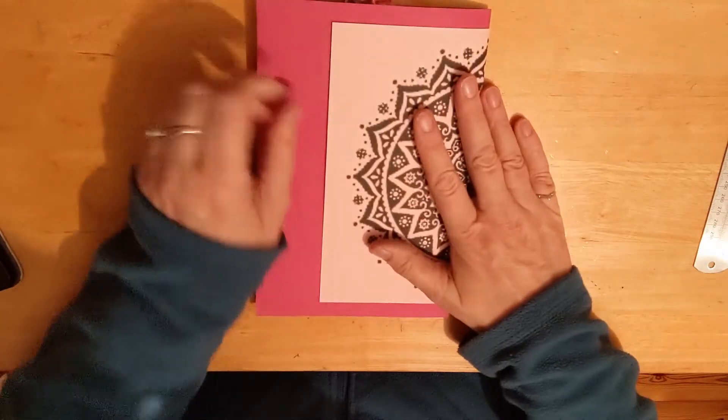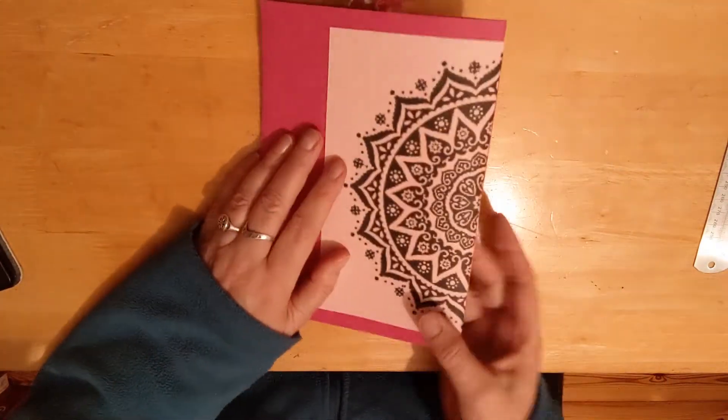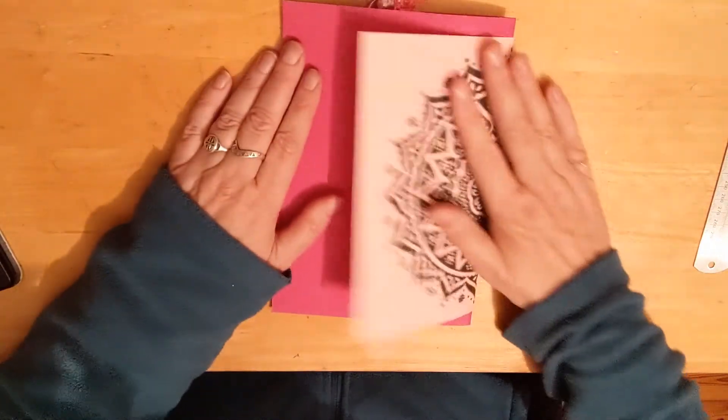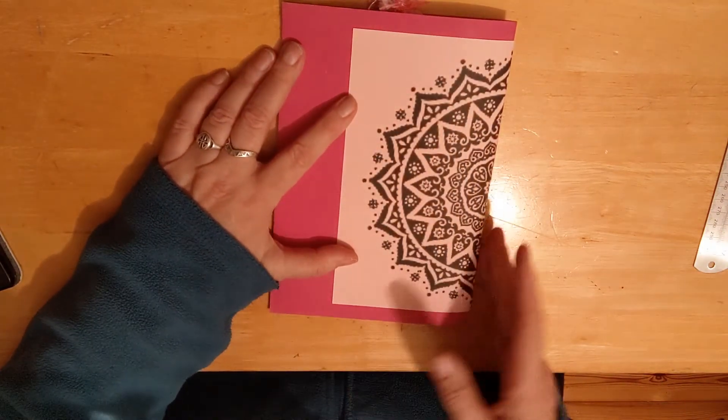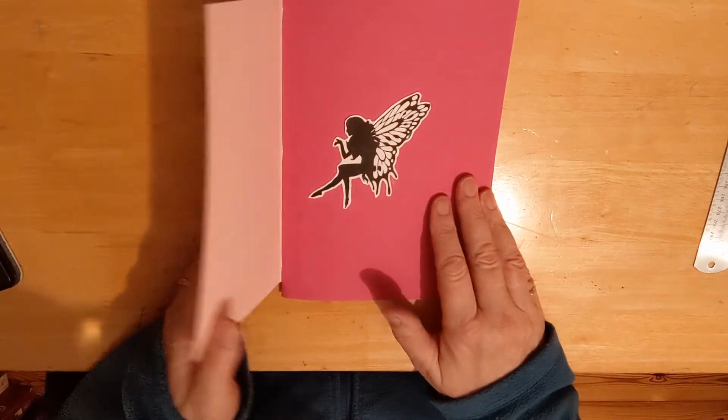That's the card again. And then there's a lighter card with the mandala in the back. And if she wants to, she can just glue that down in the back. I wouldn't do it in the front because you're covering up the little fairy feel of that.